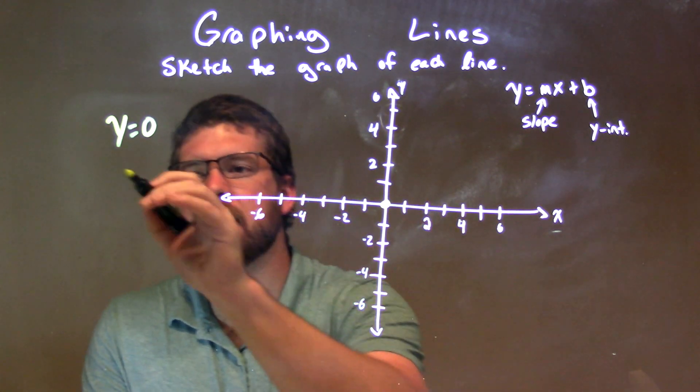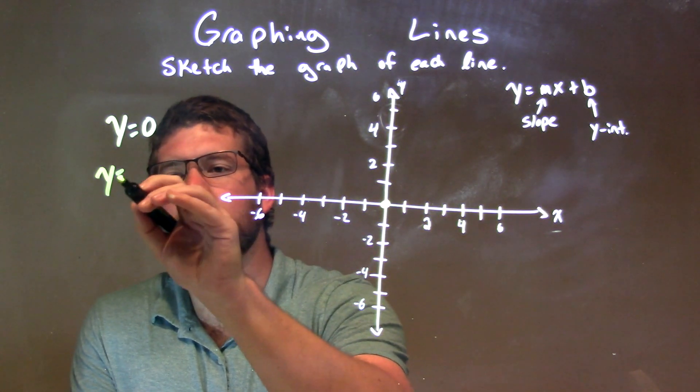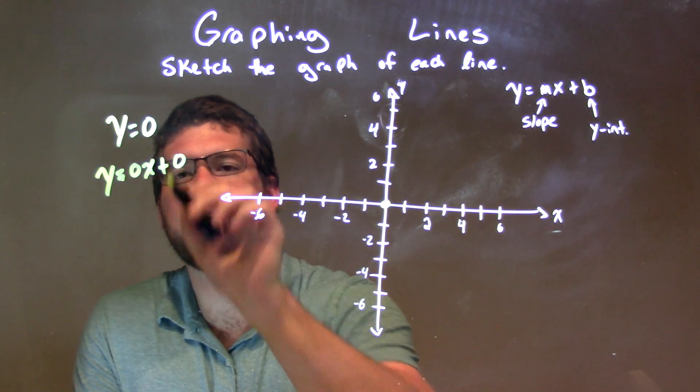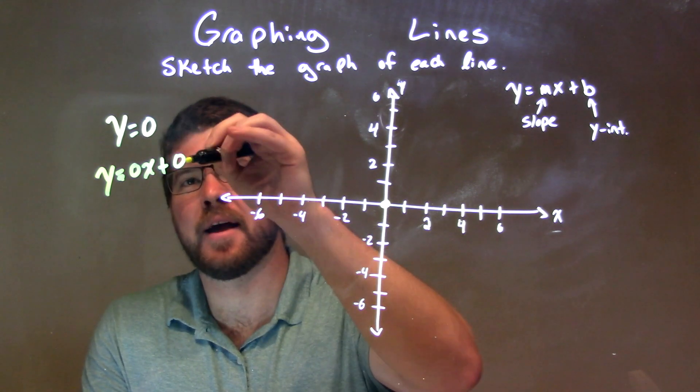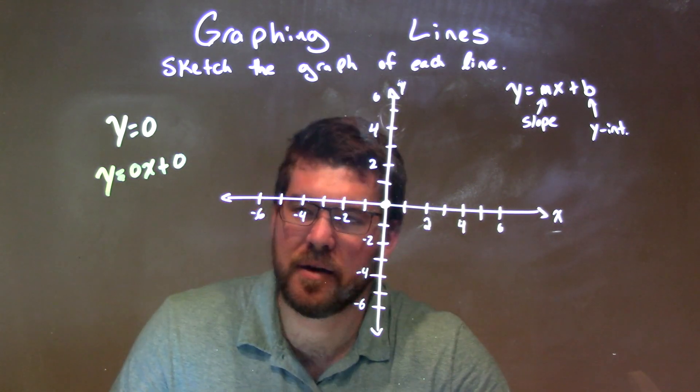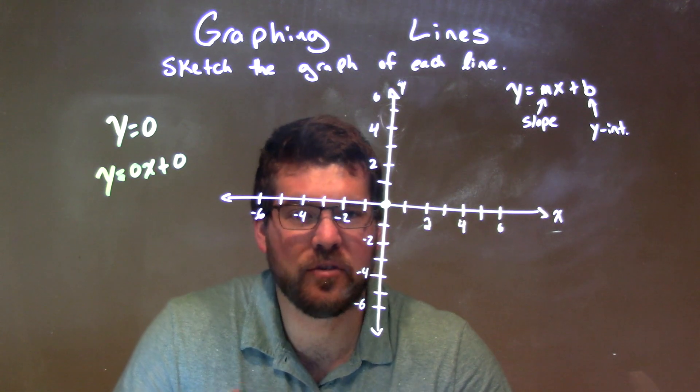To help better see that, sometimes I'll show this to my students: y equals 0x plus 0. So we have a slope of 0, we have a y-intercept of 0. That's where that comes from. It's unnecessary to write that 0x, but if it helps you see it, it helps you see it.